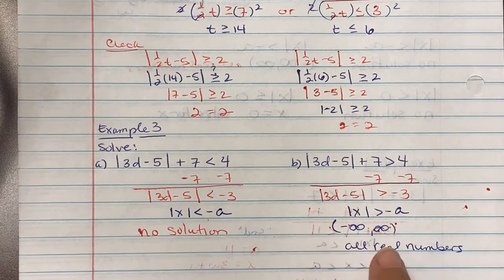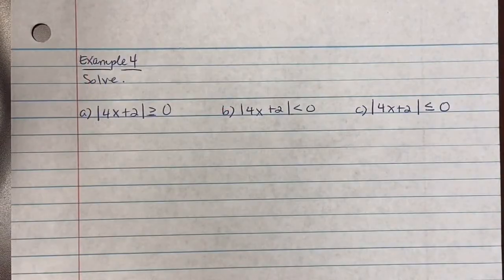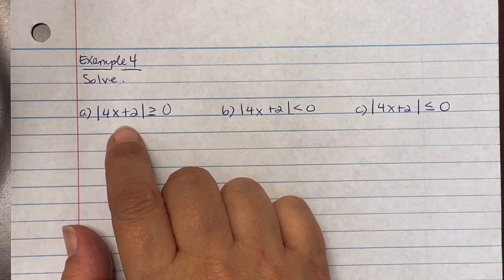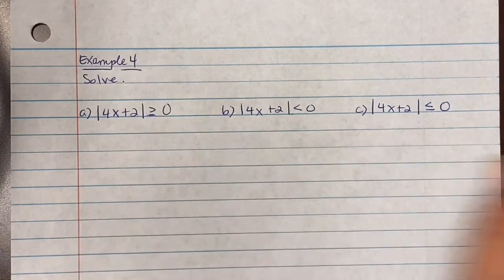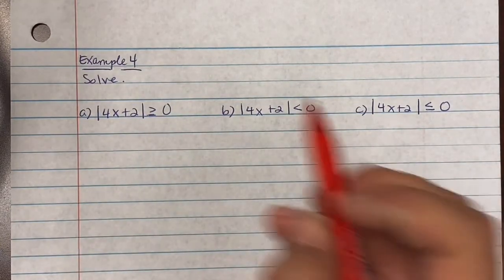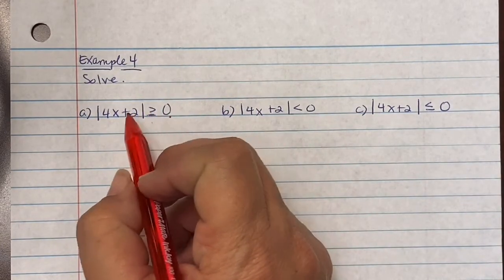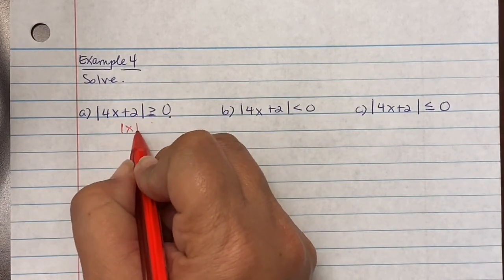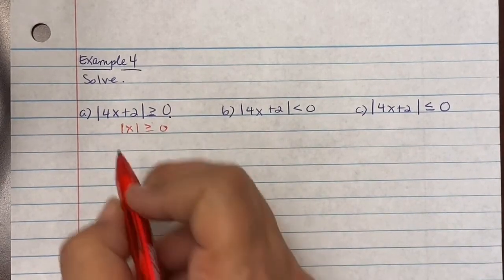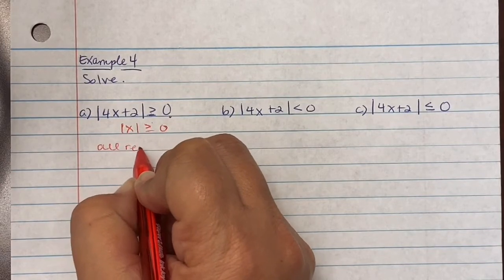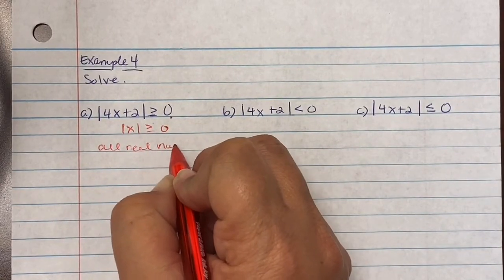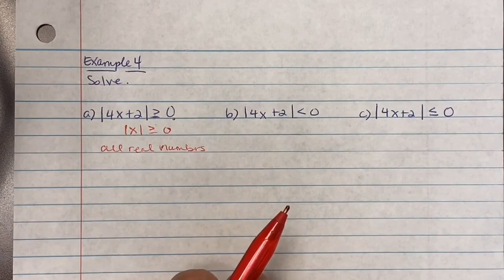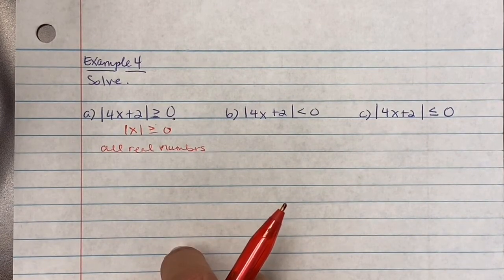Example four, part a: absolute value of 4x plus 2 is greater than or equal to zero. This is in the form of absolute value of x greater than or equal to zero. Any number inside the absolute value bars will be greater than or equal to zero regardless of the input, so the answer is all real numbers.